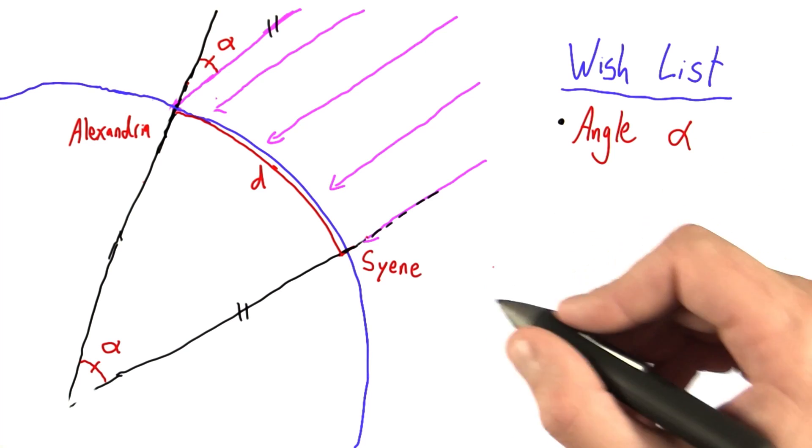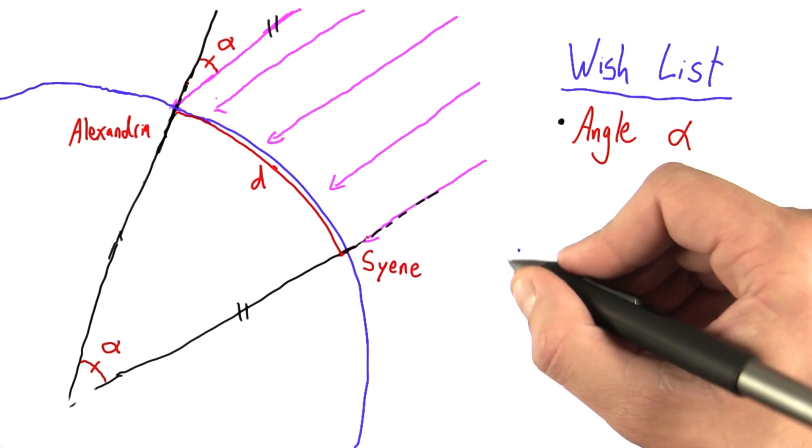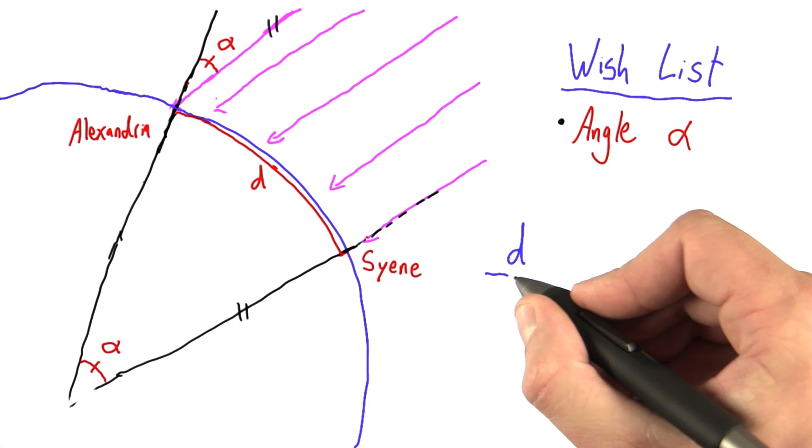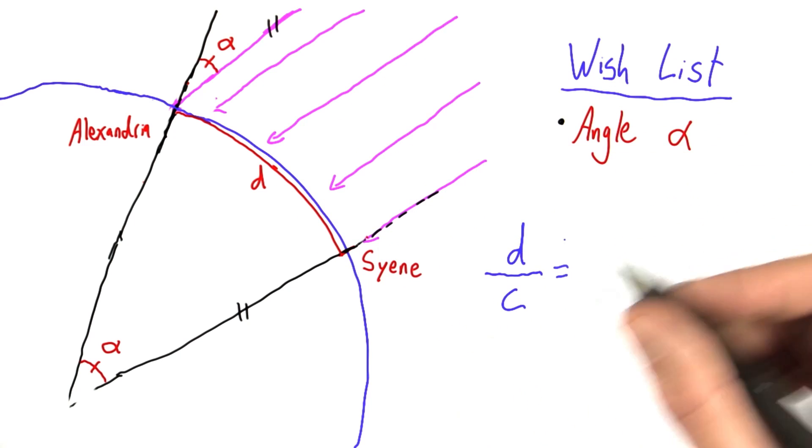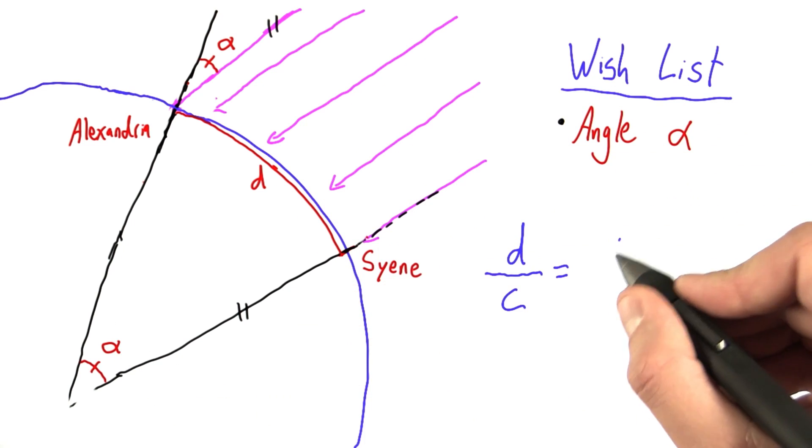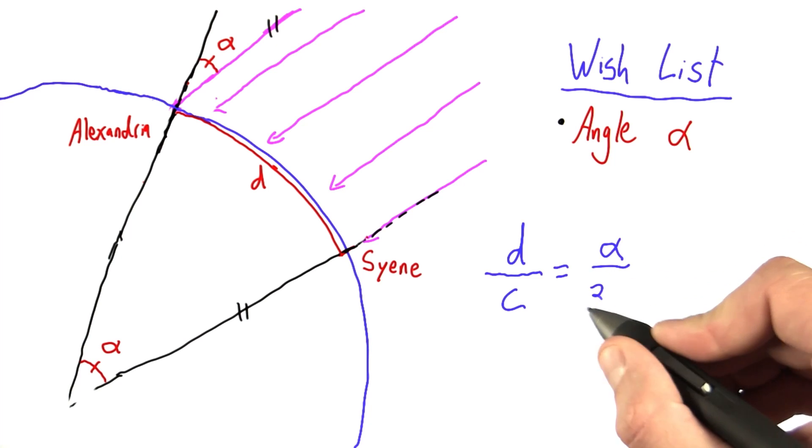Now, I'll talk about that more in a second, but let's just write that down. The ratio of this distance d to the full circumference of the Earth is also equal to the ratio of alpha to 360 degrees.